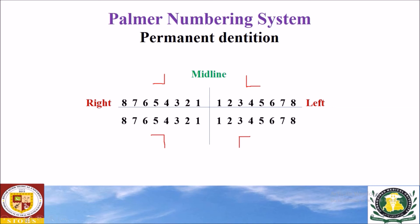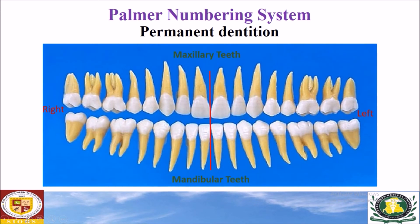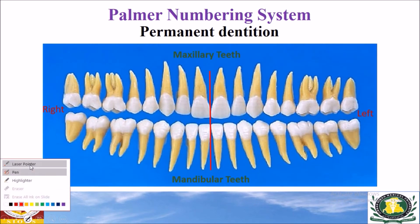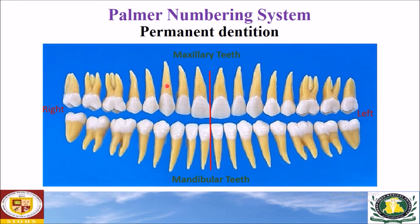Now we will do some exercises on the permanent dentition. This is the complete permanent dentition — the complete maxillary arch and the complete mandibular arch, with 16 teeth in each arch and 8 teeth in each quadrant. The four quadrants are: right maxillary, left maxillary, left mandibular, and right mandibular.